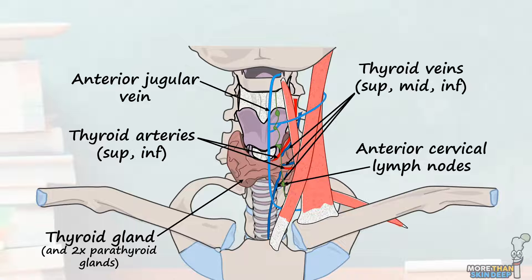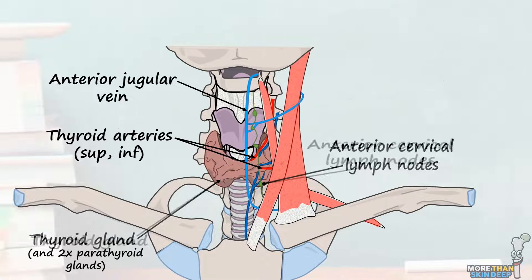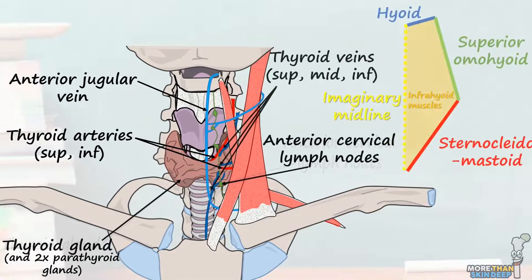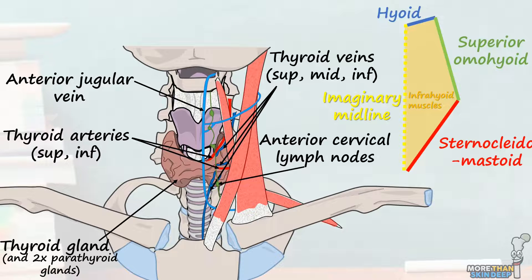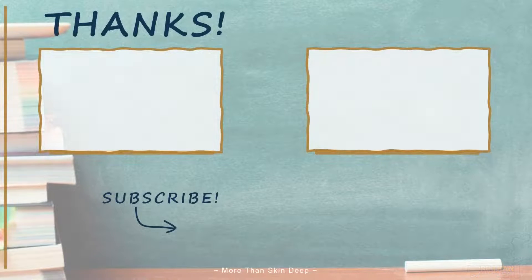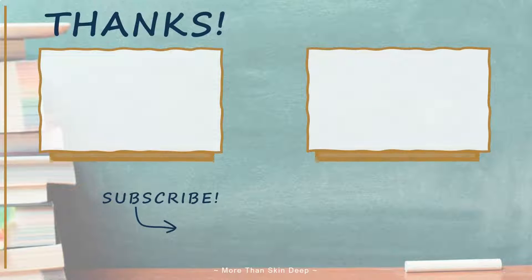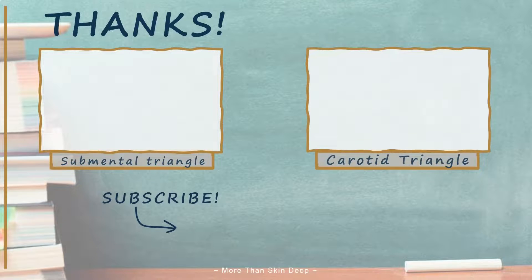Lastly, most textbooks also consider the trachea, larynx, and esophagus to lie in the deepest part of the muscular triangle. And there you go — that's the borders and contents of the muscular triangle of the neck. I have videos covering all subdivisions of the anterior triangle of the neck, so if you haven't seen them yet, I suggest you go and check them out. I hope you learned something and have a great day.